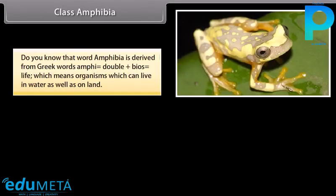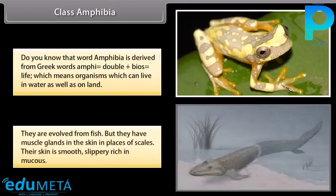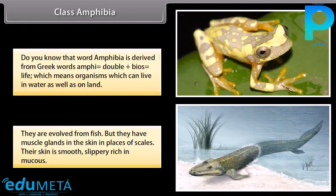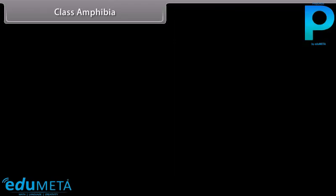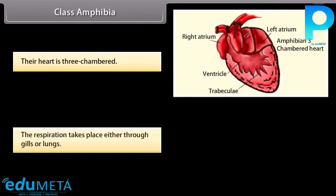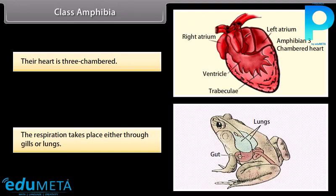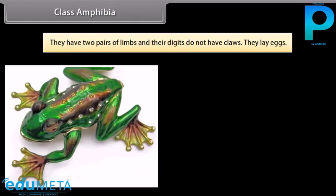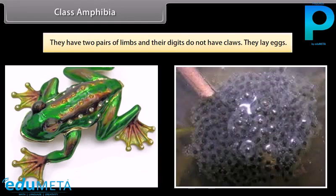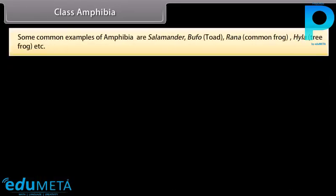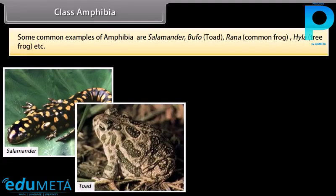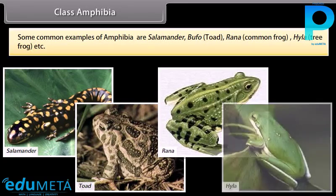Class Amphibia: the word amphibia is derived from Greek words amphi, meaning double, plus bios, meaning life — organisms which can live in water as well as on land. They evolved from fish but have mucus glands in the skin instead of scales. Their skin is smooth, slippery, and rich in mucus. Their heart is three-chambered. Respiration takes place either through gills or lungs. They have two pairs of limbs; their digits do not have claws. They lay eggs. Common examples are Salamander, Bufo (toad), Rana (common frog), and Hyla (tree frog).